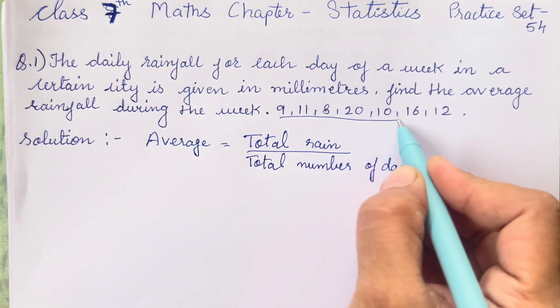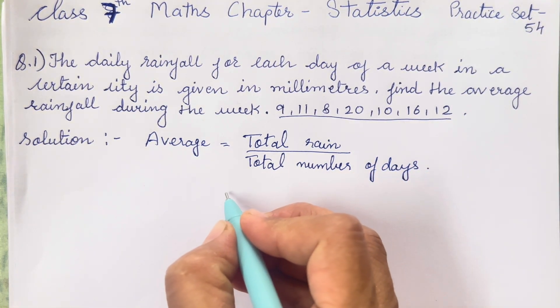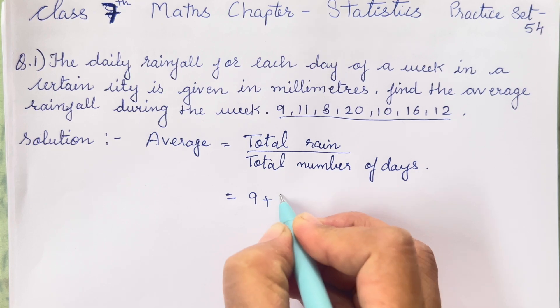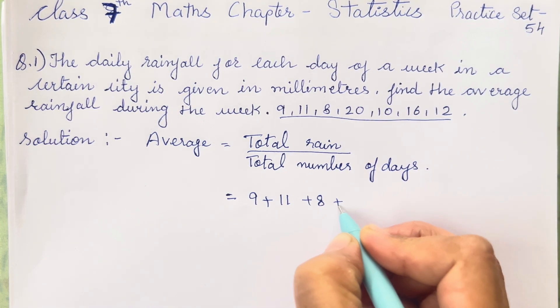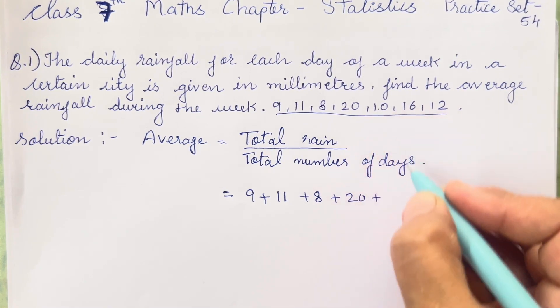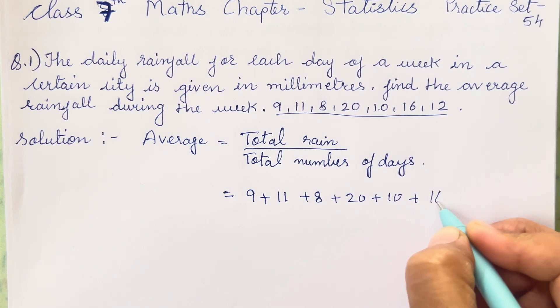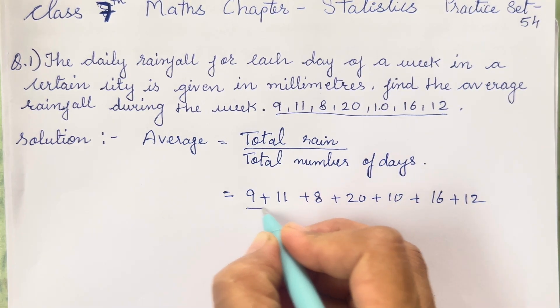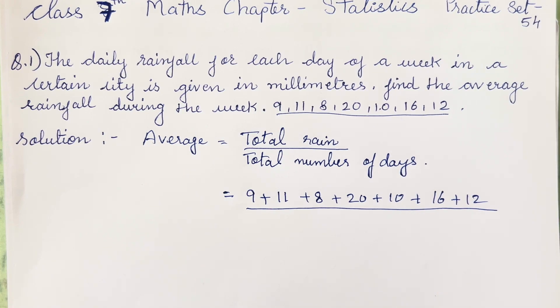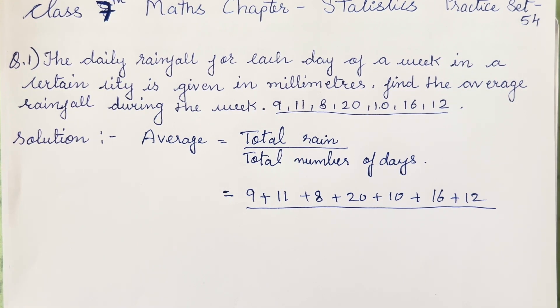So whatever the numbers that have been given in the question, you all have to write it down. That is 9 plus 11 plus 8 plus 20 plus 10 plus 16 plus 12. Now addition is very easy children. I am not explaining how you all have to add it. You all know it very well how you all have to add it.